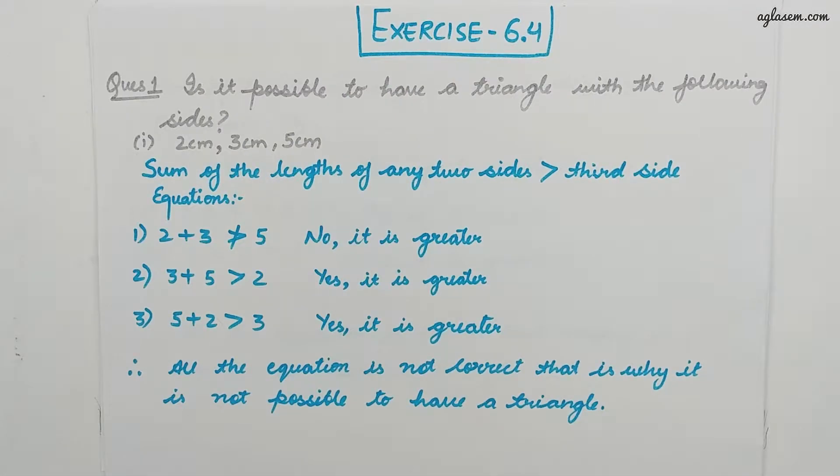Hey students, welcome to Aghlasm School. Today we are going to cover Exercise 6.4 of Chapter 6, that is Angles and its Properties, of Class 7 NCERT Mathematics. So let's start with the questions. This is Exercise 6.4 and we are going to solve every question of this exercise.